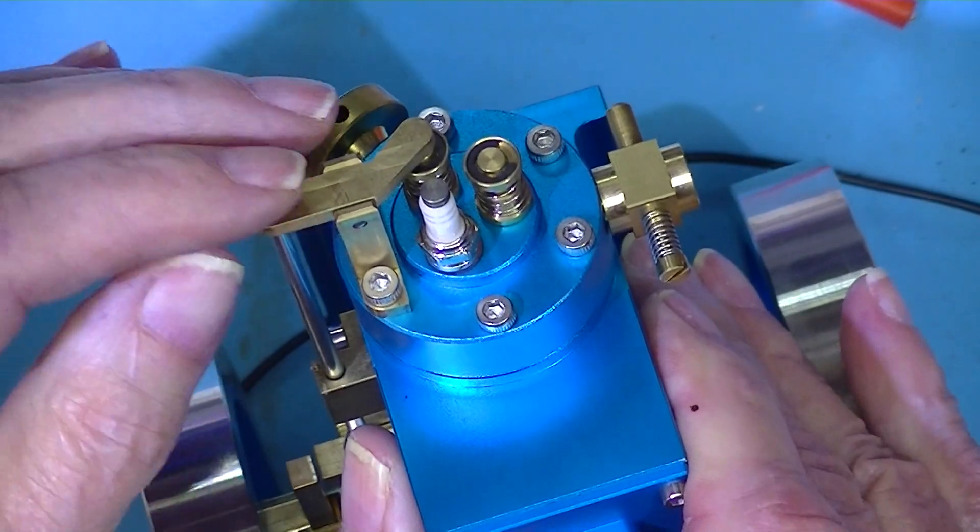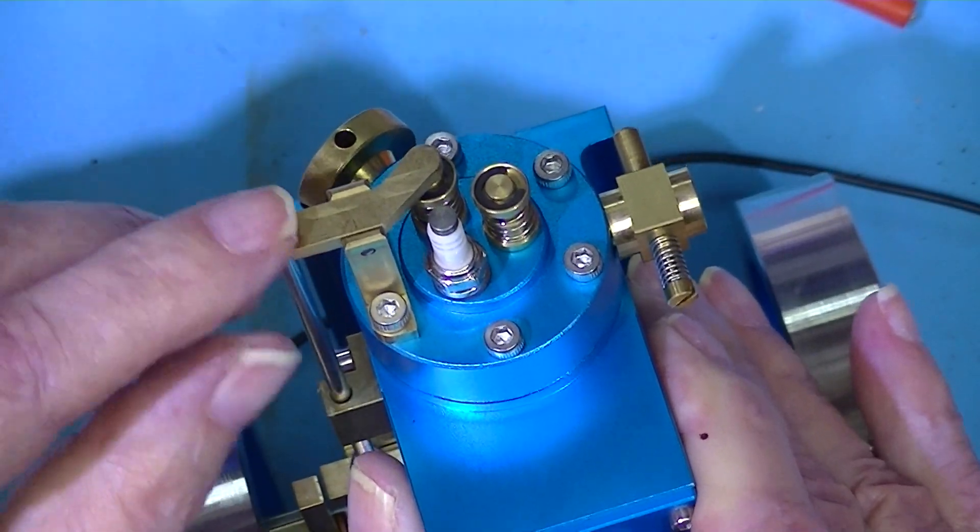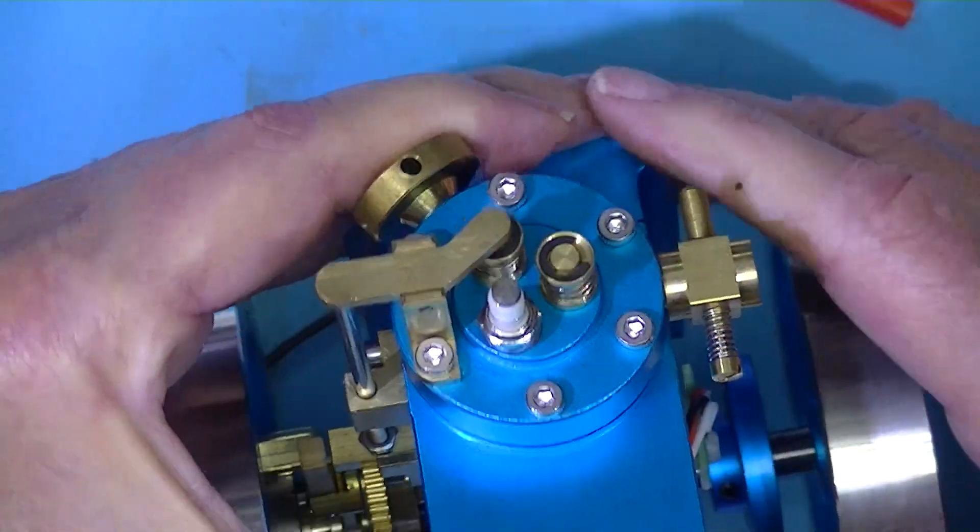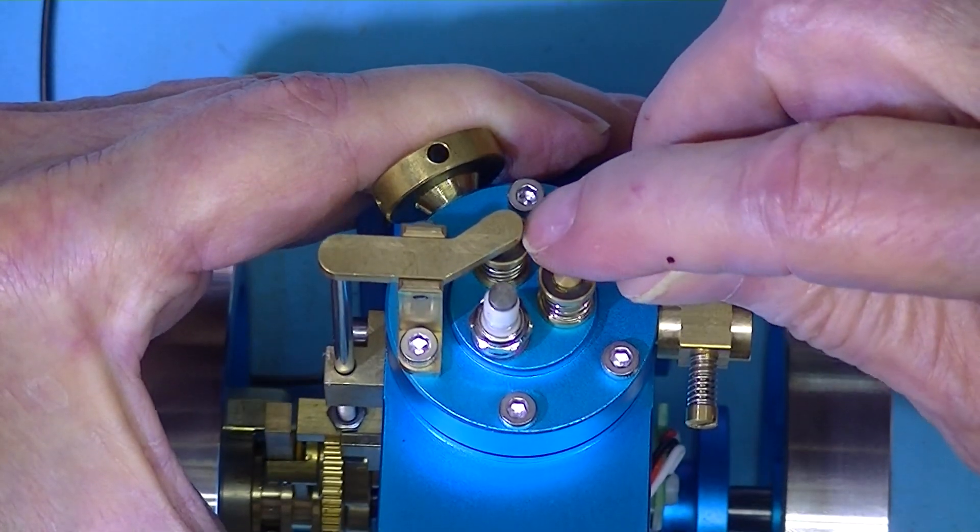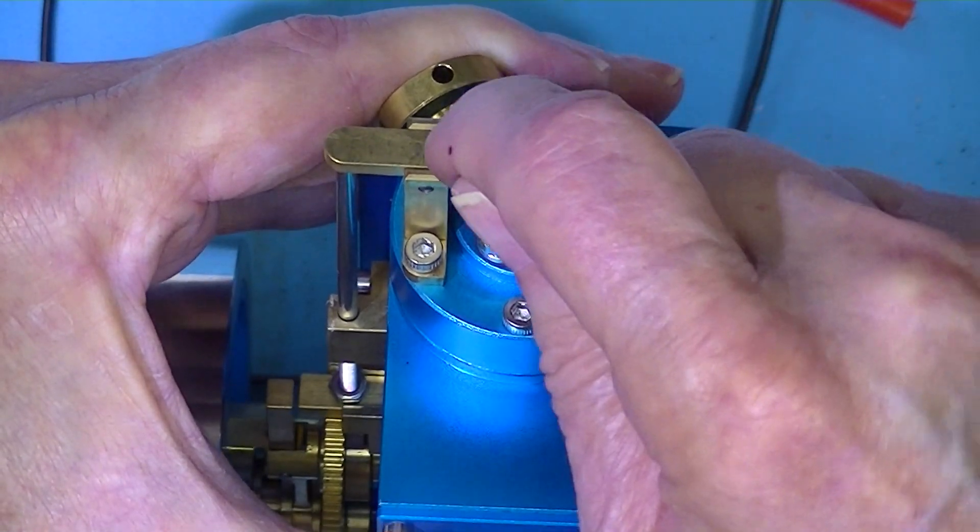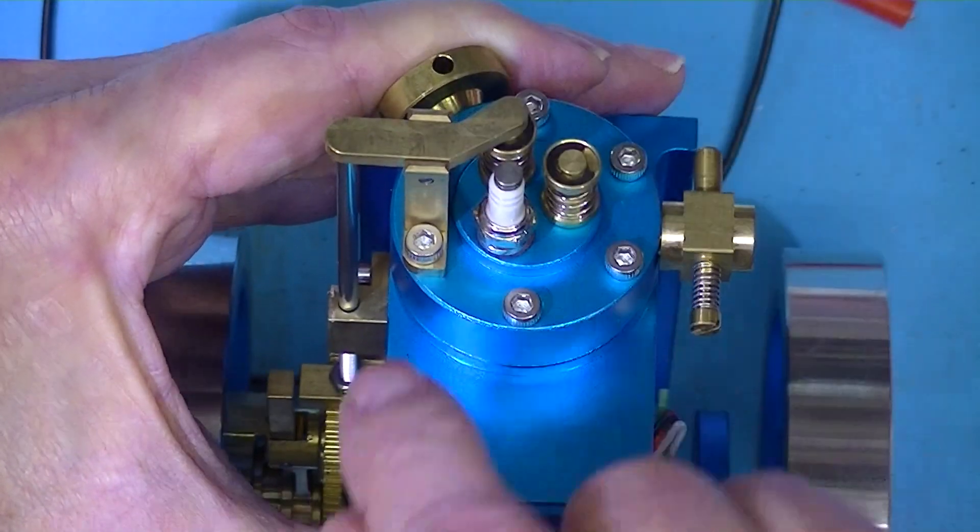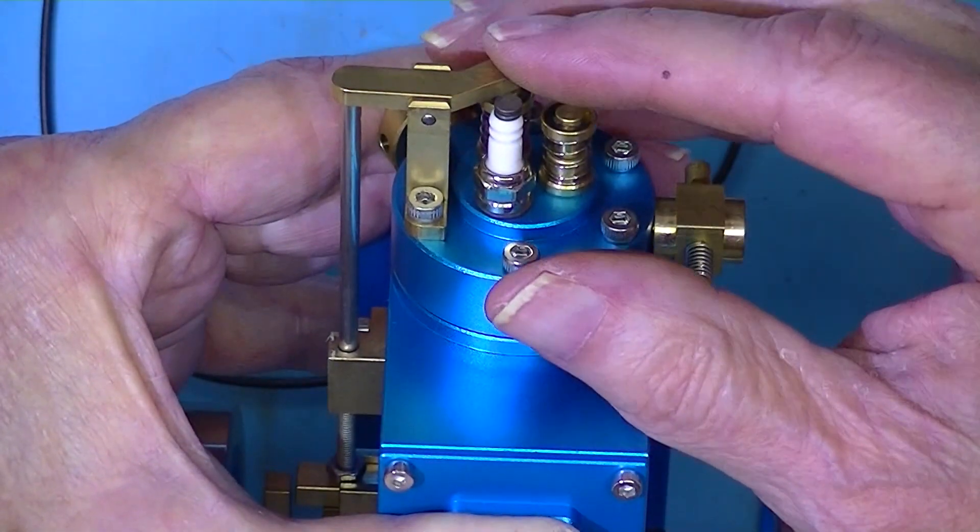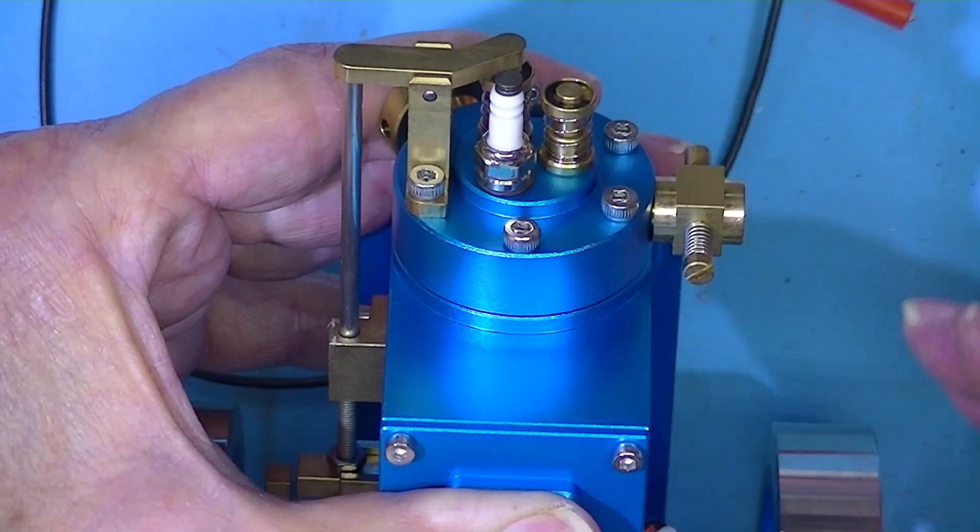This is the exhaust valve, and of course it's opened and closed by the exhaust valve. Underneath here you can see the exhaust valve spring. This is what would be called a rocker arm. A push rod comes up, the arm rocks, opening the exhaust valve.